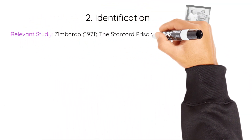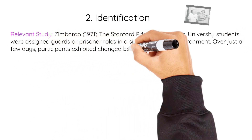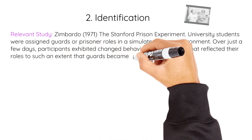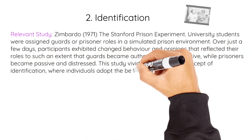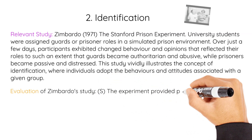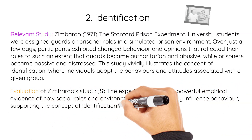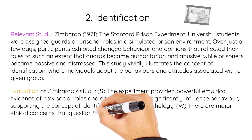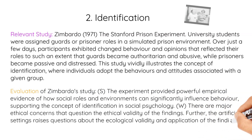A relevant study is Zimbardo's 1971 Stanford Prison Experiment. University students were assigned guard or prisoner roles in a simulated prison environment. Over just a few days, participants exhibited changed behaviour and opinions that reflected their roles to such an extent that guards became authoritarian and abusive, while prisoners became passive and distressed. This study vividly illustrates the concept of identification, where individuals adopt the behaviours and attitudes associated with a given group. Strength: the experiment provided powerful empirical evidence of how social roles and environments can significantly influence behaviour, supporting the concept of identification in social psychology. Weakness: there are major ethical concerns that question the ethical validity of the findings; further, the artificial setting raises questions about ecological validity and application to real-world settings.